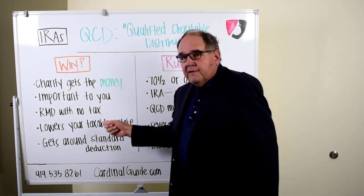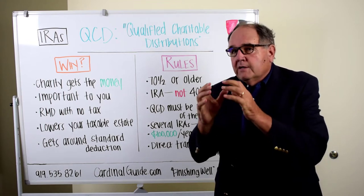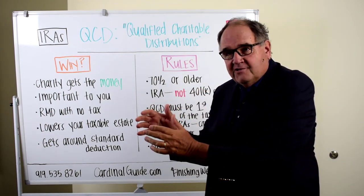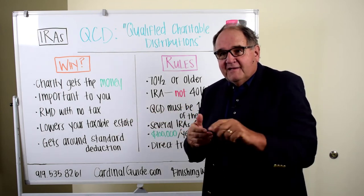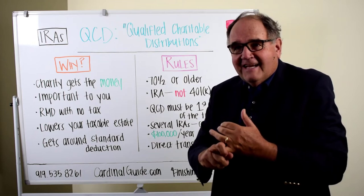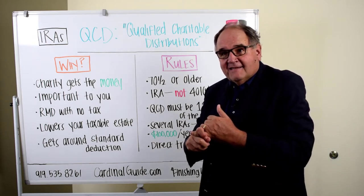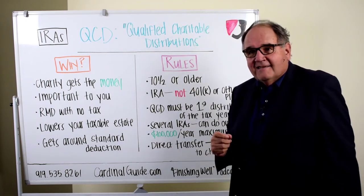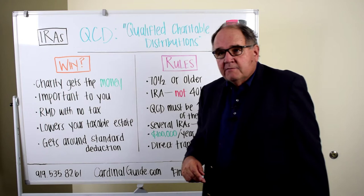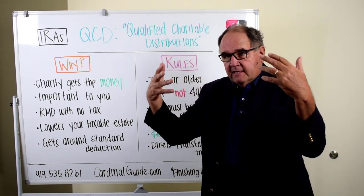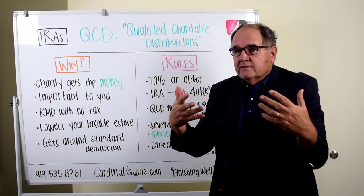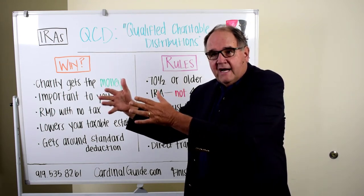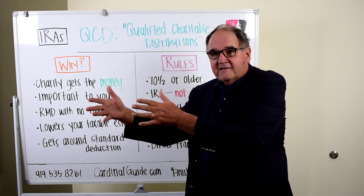Another reason to consider QCDs: when you turn age 72, you need to take required minimum distributions, or RMDs. People at this age or older know what RMDs are — it's the money that IRS regulations make you take out of your IRA and pay taxes on every year. QCDs are a way to get around the taxes on the RMD. It will also lower your taxable estate if you have a large estate, by reducing the size of your IRA over time.